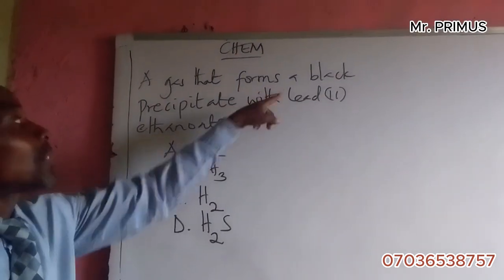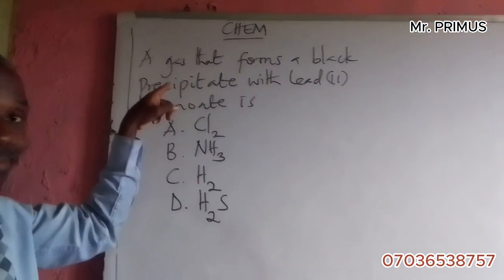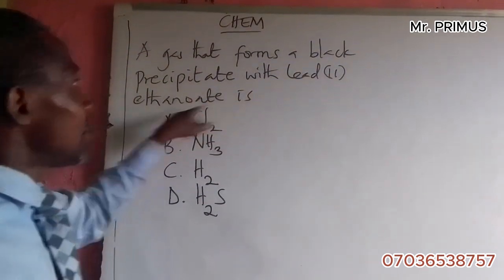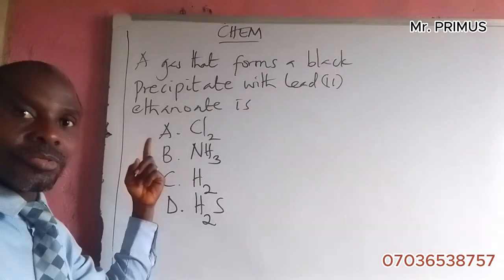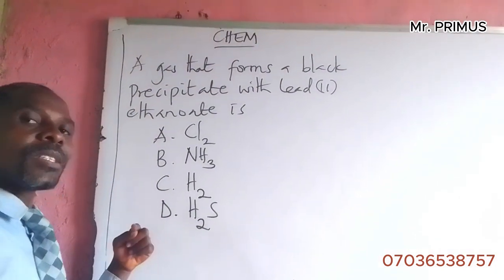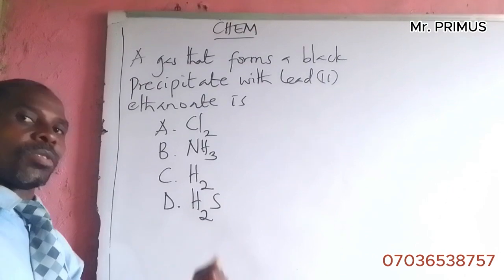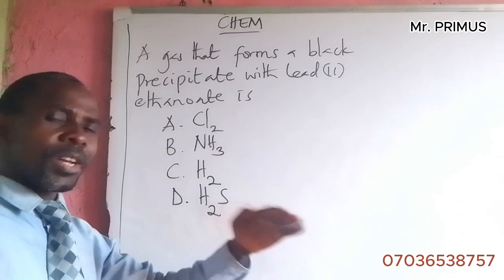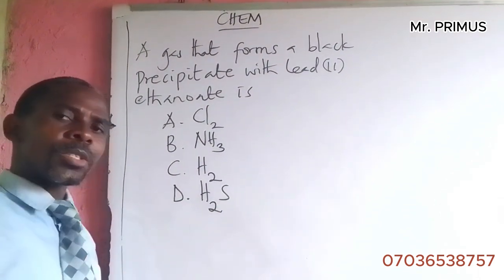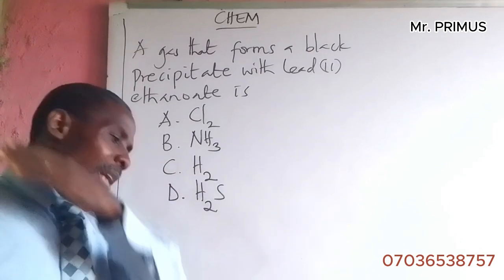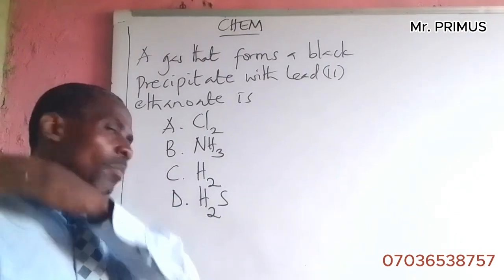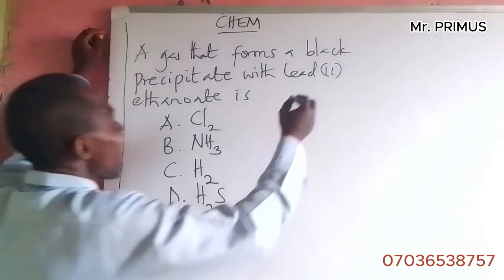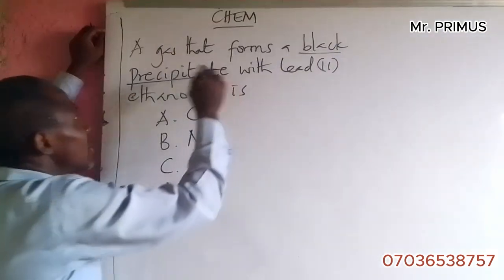Let's look at another question. A gas that forms a black precipitate with lead(II) ethanoate — is it chlorine, ammonia, hydrogen, or hydrogen sulfide? This is a significant reaction, and when you perform this experiment in the laboratory, you will be happy to see this change.